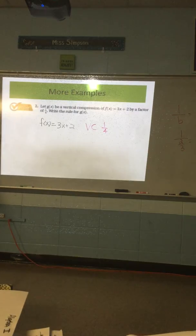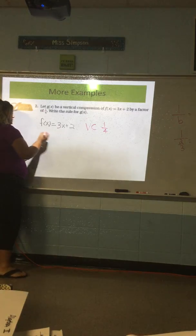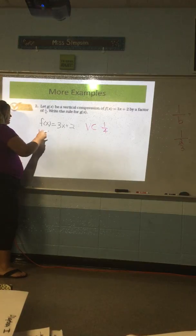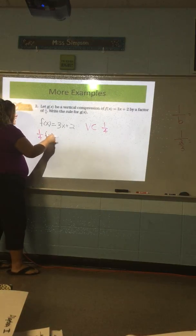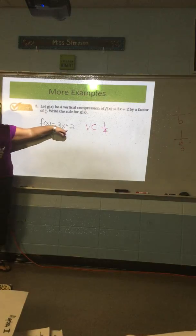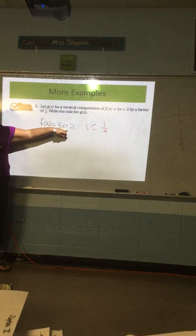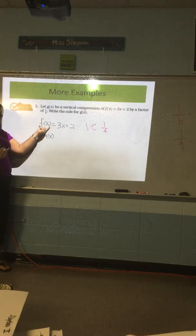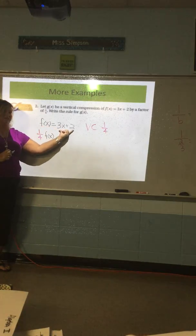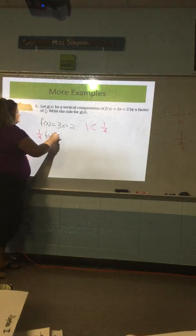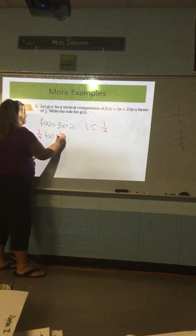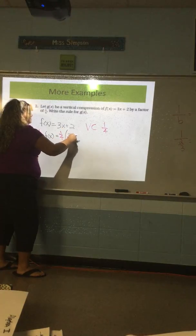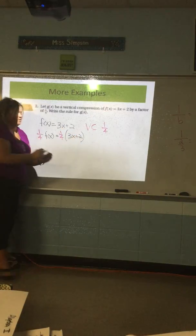Now, according to our rule, if I vertically compress something, where does that go? Just multiply the whole equation. I'm going to multiply the entire equation. By what? 1 fourth. 1 fourth goes out here. I'm going to do that entire equation. This represents this. Does everybody understand that? If these two are equal, every time I see this, I'm going to exchange it with this. So 1 fourth.